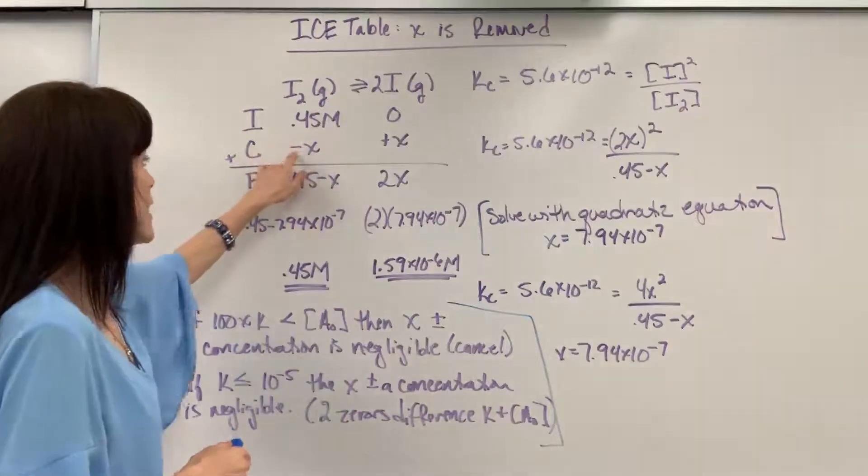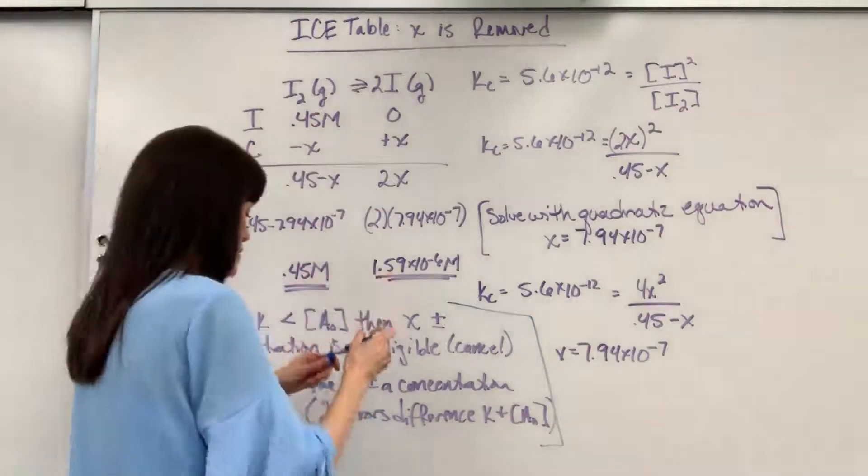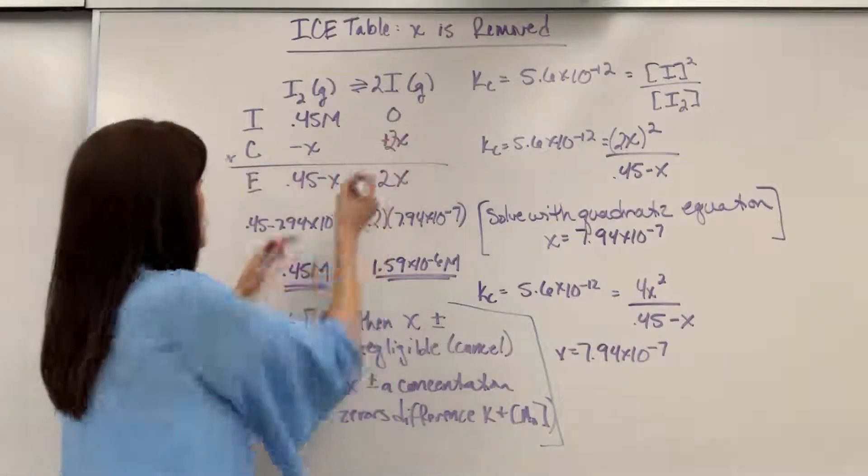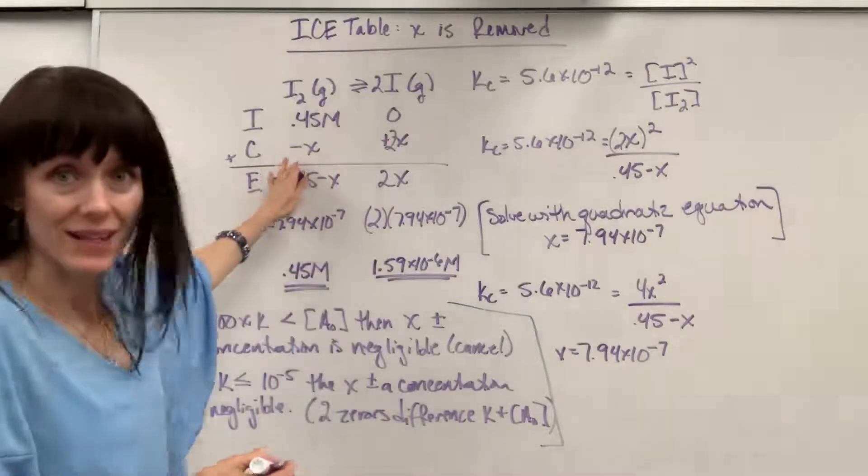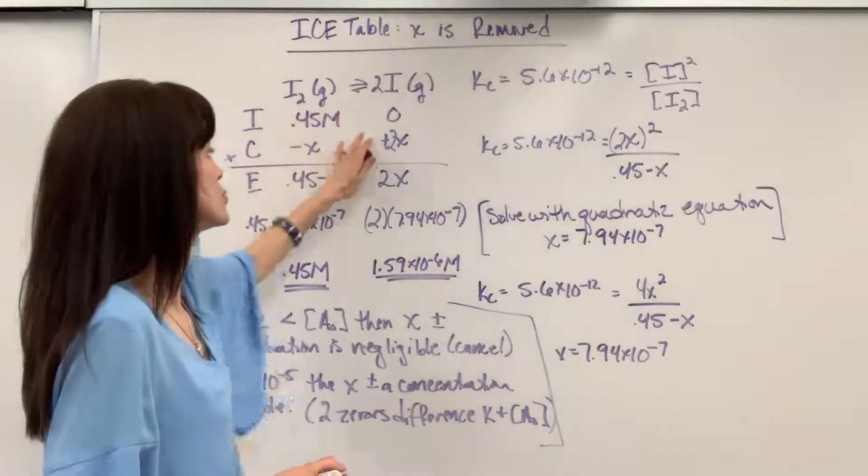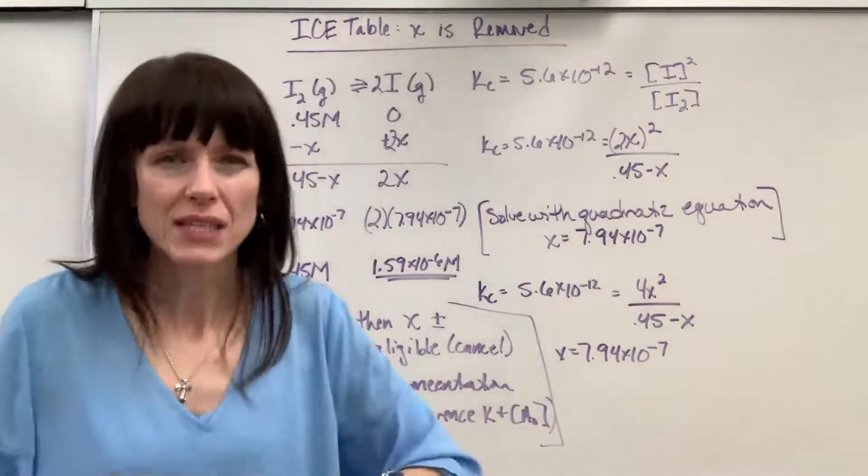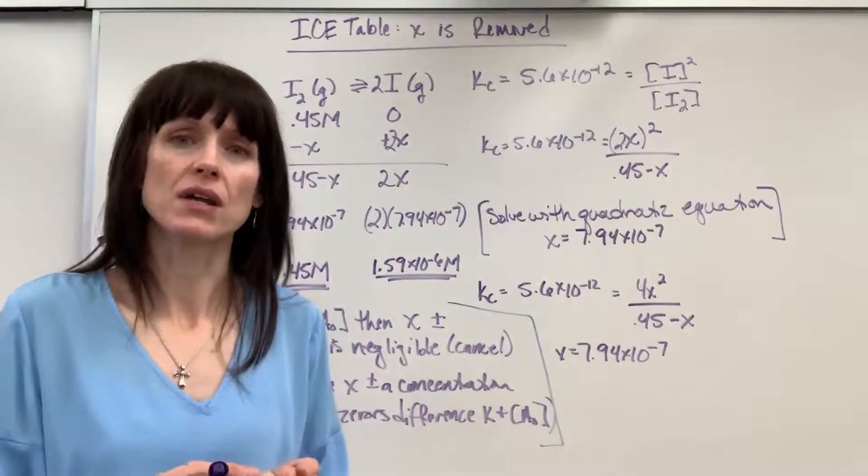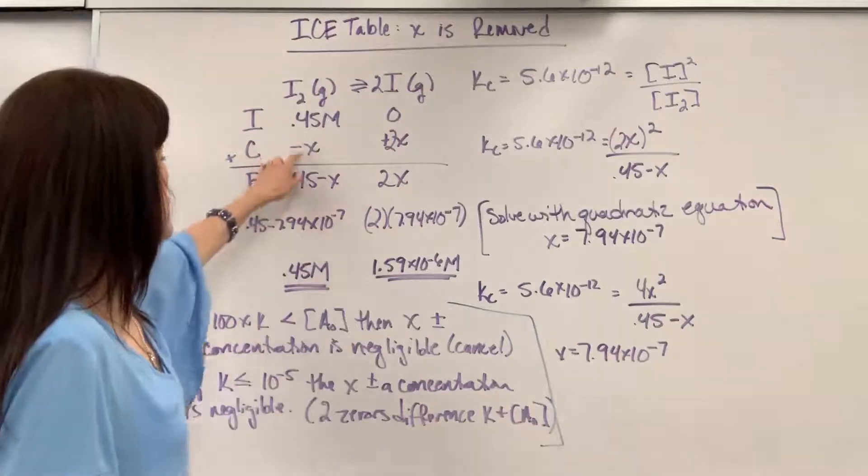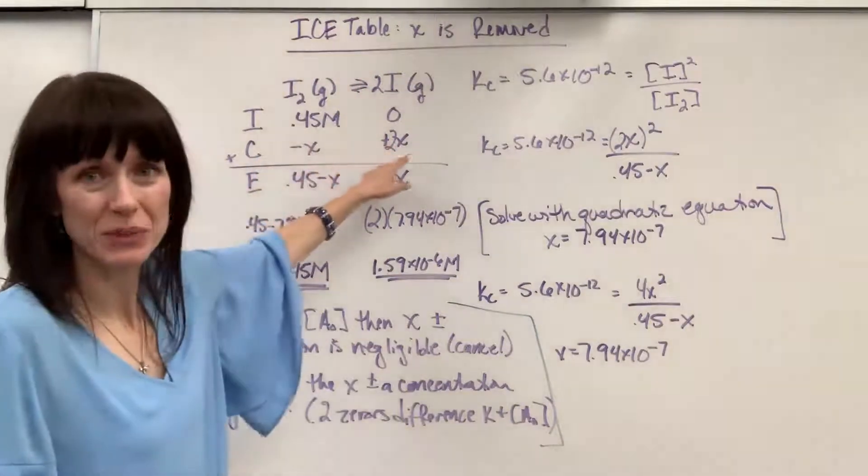So we're going to lose an amount, excuse me, I forgot to write one thing in here. We're going to lose an amount of the reactant and for every one mole that reacts, it's going to produce two moles of the product. So your easy takeaway on this, you use x for your unknown and you take the coefficient and put that in front of the x.